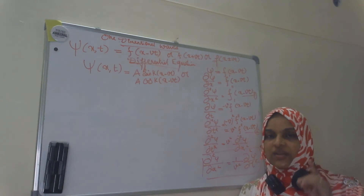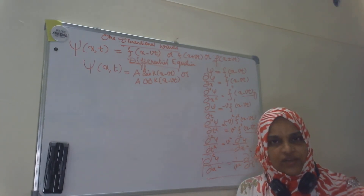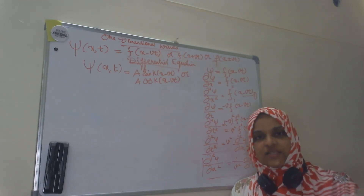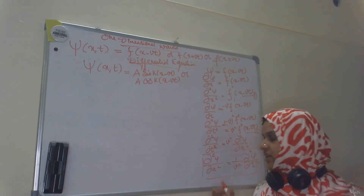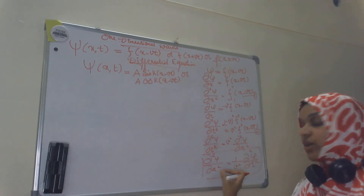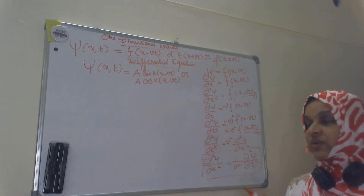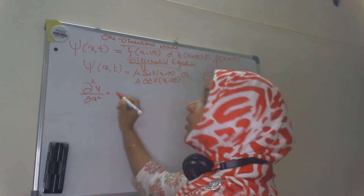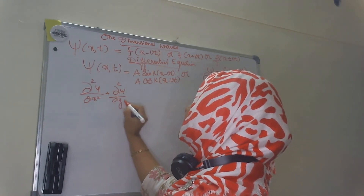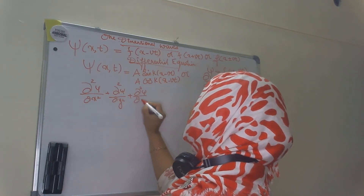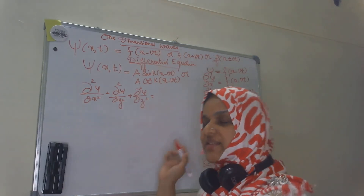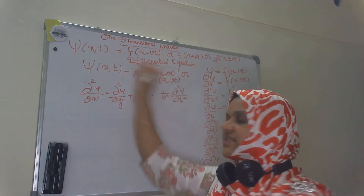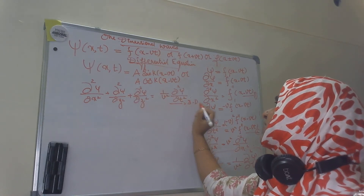For one dimension, we consider only a single coordinate x. For three dimensions, we have to consider three coordinates: x, y, and z. So the equation gains two more terms on the left-hand side with respect to y and z. The three-dimensional wave equation becomes: ∂²psi/∂x² + ∂²psi/∂y² + ∂²psi/∂z² = (1/v²) ∂²psi/∂t². This represents the three-dimensional wave equation.